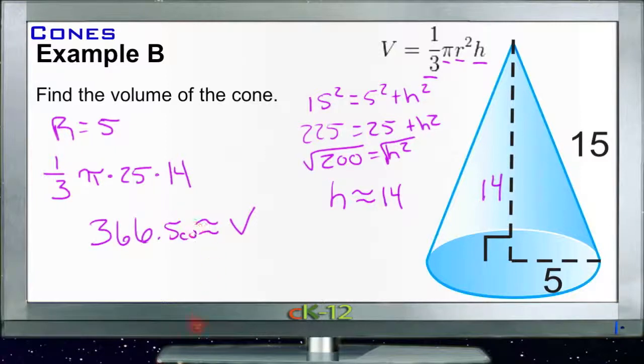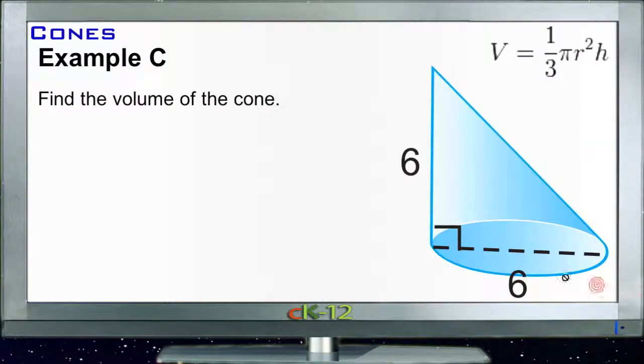Example C says find the volume of the cone. This one we actually have what we need. We have one third, we know pi, we know radius - well, technically we have the diameter, so the radius would be half the diameter, which would be 3. And the height we already have is 6.